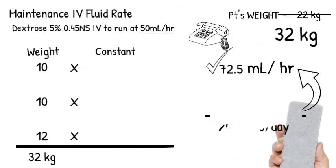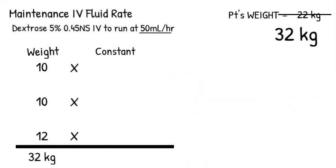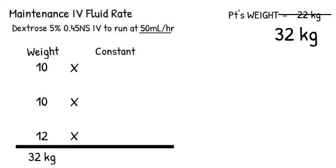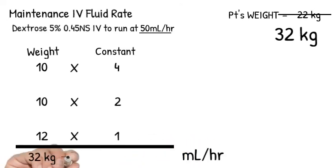So let's talk about the shortcut. As a bedside nurse, I need to learn how to be efficient, especially in calculations. I will keep this set up, but instead of using the 100-50-20, I will use a different set of constants. I'll use 4, 2, and 1. That's why it's called the 4-2-1 method. This way, at the bottom, instead of mls per day, we will go directly to mls per hour. We go straight from the patient's weight to the patient's rate.